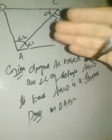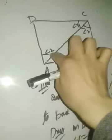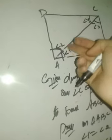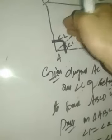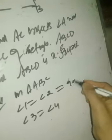Proof: angle 1 equals angle 2, and angle 3 equals angle 4. Now angle 1 plus angle 2 equals 90°, because the whole angle A is 90° since this is a rectangle. Since angle 1 equals angle 2 and their sum is 90°, each part equals 45°. Similarly, angle 3 plus angle 4 equals 90°, so angle 3 equals angle 4 equals 45°.